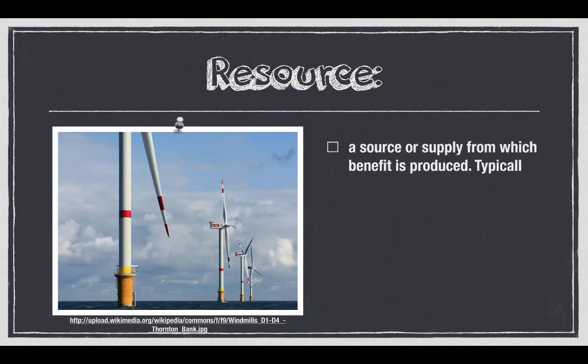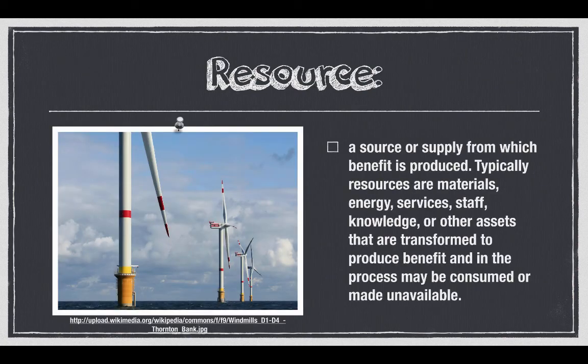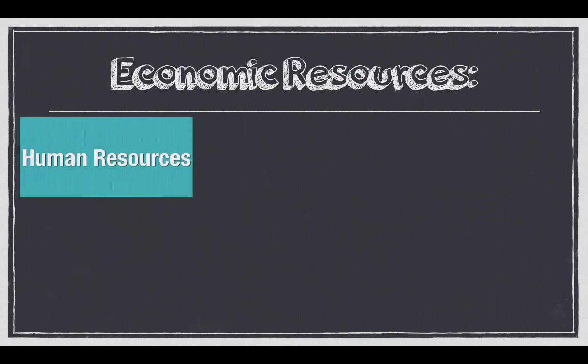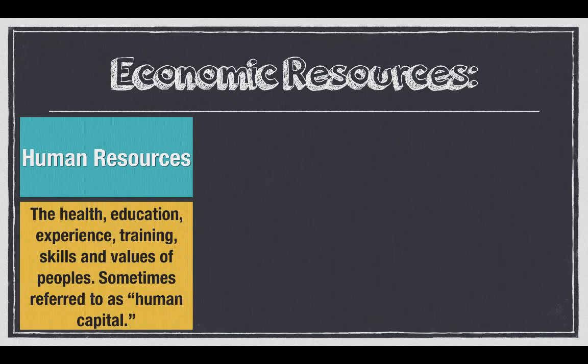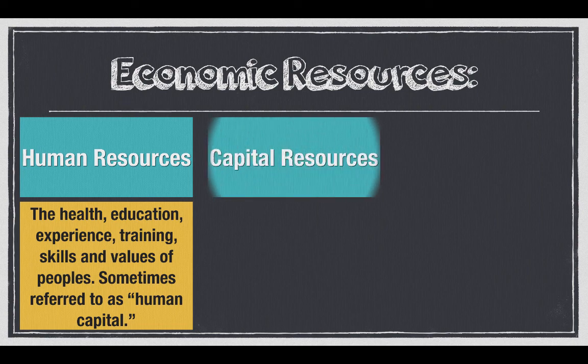Next, resource. A resource is a source from which benefit is produced. Resources are typically materials, energy, service, staff, knowledge, or other assets that are transformed to produce benefit and in the process may be consumed or made unavailable. Economic resources include human resources — the health, education, experience, training, skills, and values of people, sometimes referred to as human capital.